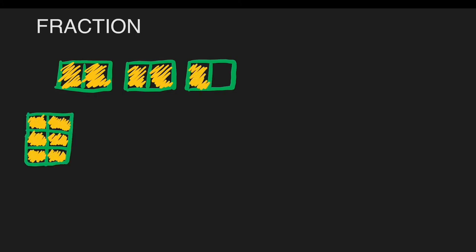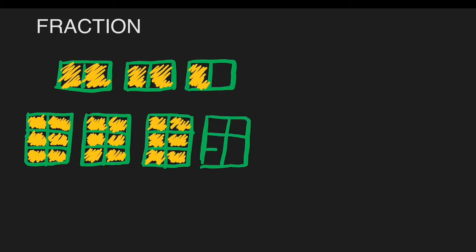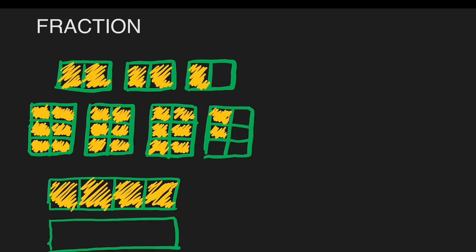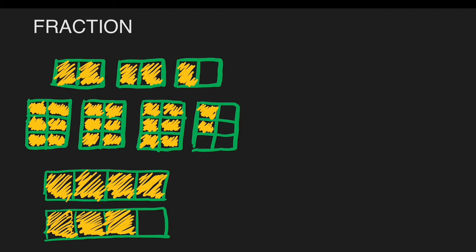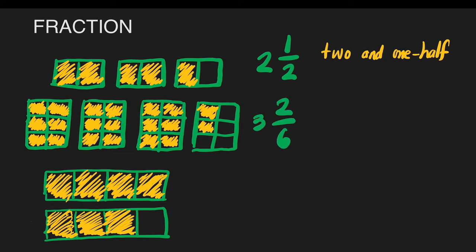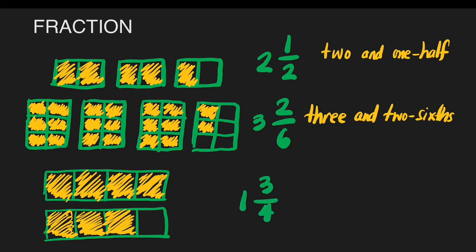Let me have the drawing again because it's really easy for us to visualize if we have a diagram of a fraction. Sometimes students are confused because they don't see the picture of what fractions look like. For the first example, this is two wholes and one-half, written as two and one-half. For the second example, this is three and two-sixths, written as three and two-sixths. For the third example, we have one and three-fourths, written as one and three-fourths.